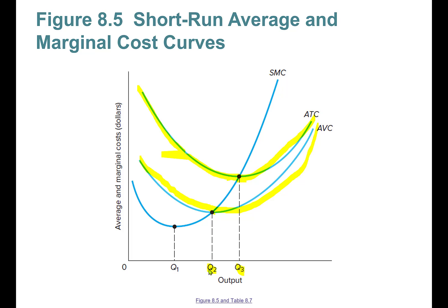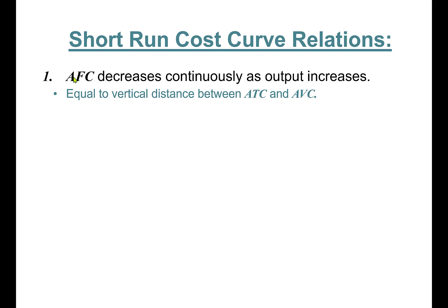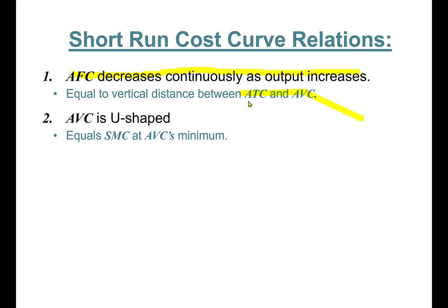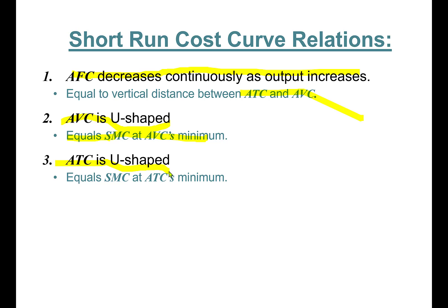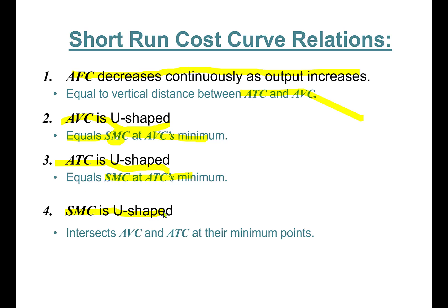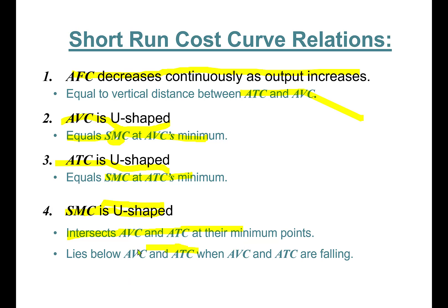Let's talk about short run cost curve relations. Average fixed cost decreases continuously as output increases. The vertical distance between ATC and AVC equals average fixed cost. Average variable cost is U-shaped and equals short run marginal cost at AVC's minimum. Average total cost is U-shaped and equals short run marginal cost at ATC's minimum. The marginal cost curve intersects both AVC and ATC at their minimum points.